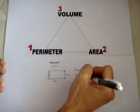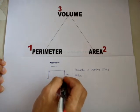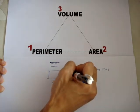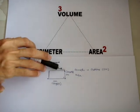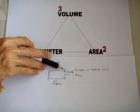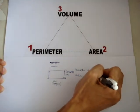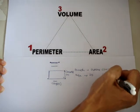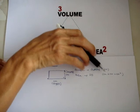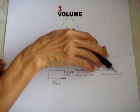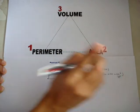Now we talk about area. The longer part, as we know, is the length, and the shorter part is called the breadth. For the area, we know that CM times CM gives you CM². So CM × CM = CM², and therefore the area unit is in CM².